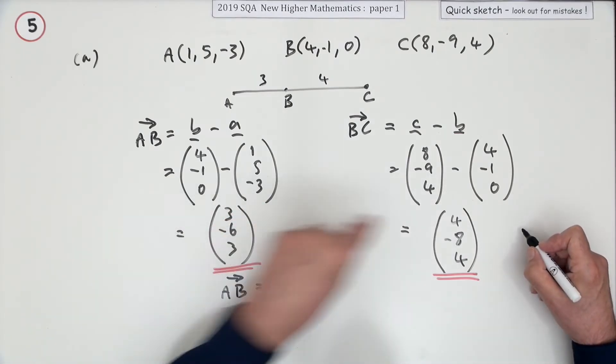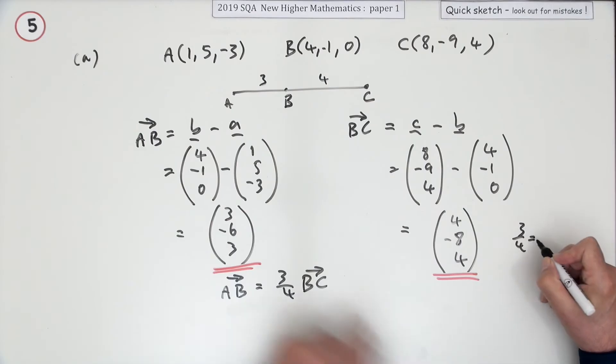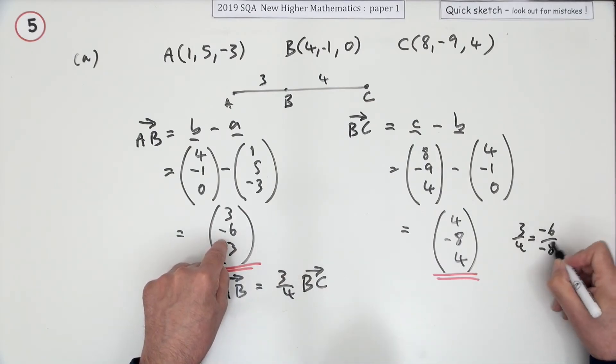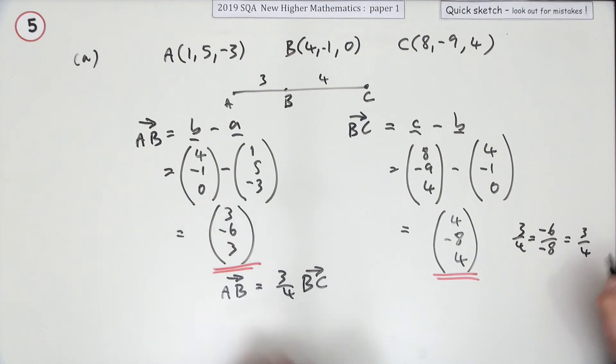I know that because they all divide that way. Three over four is the same as negative six over negative eight, is the same as three upon four again. They're all the same, so it is that multiple of it.